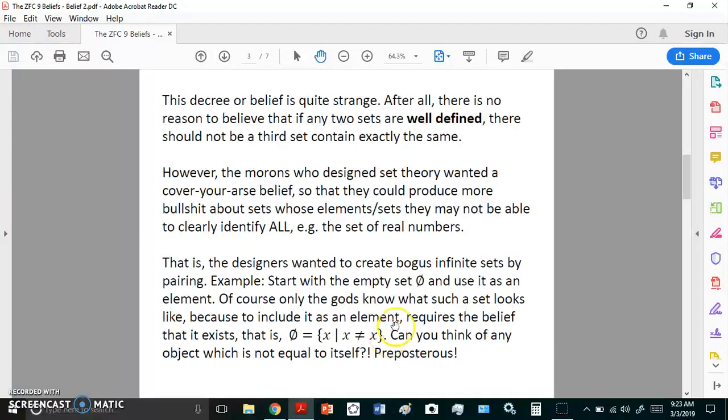They wanted to create bogus infinite sets by pairing. They could start off with an imaginary empty set, which they symbolize like that, and then use it as an element. Only the gods know what such a set looks like because to include it as an element, one requires the belief that it exists. The empty set is equal to the set of all x such that x is not equal to itself. Can you think of any object which is not equal to itself? Preposterous. But in this case, the moron orangutans of set theory accept that such a set exists. It has to exist because everything else fails, even from the first belief of extensionality.